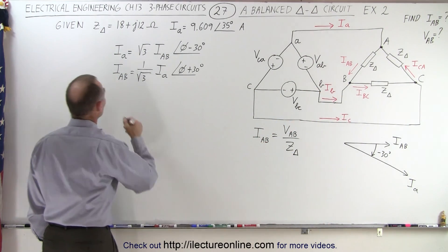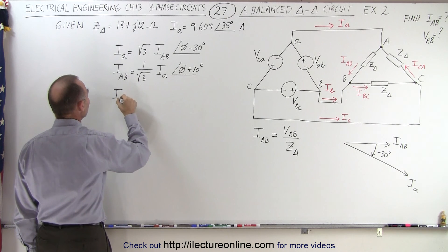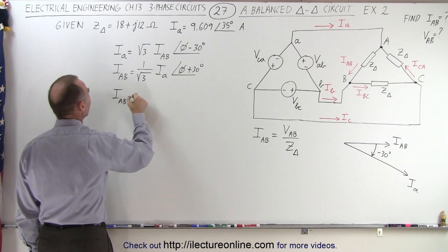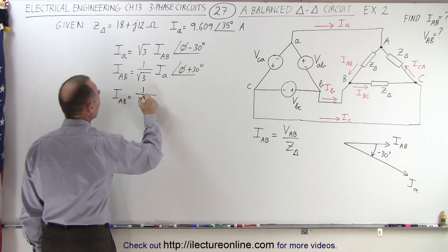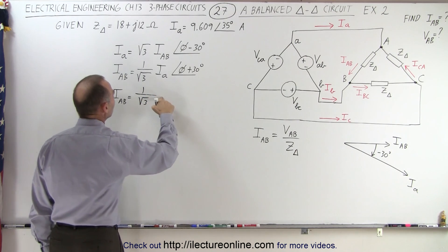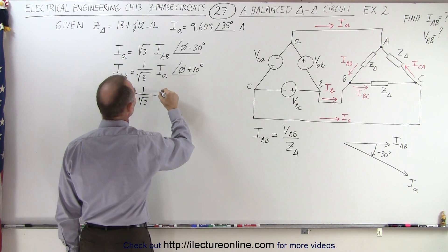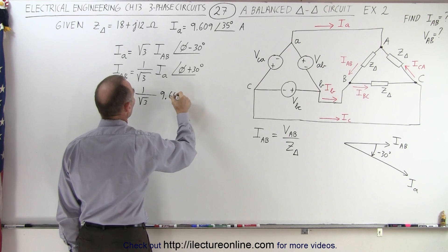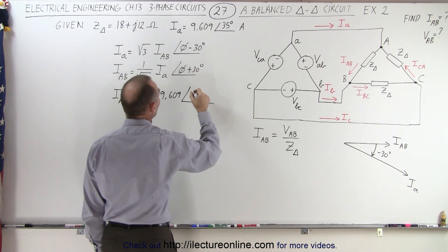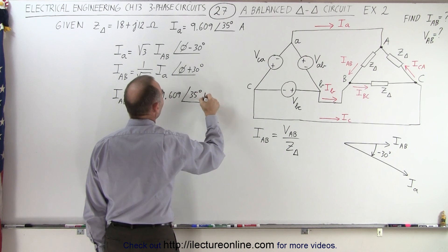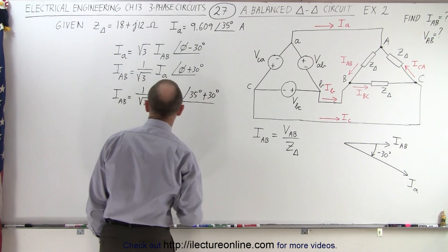So, that's why we have this equation, which means that IAB is therefore equal to one over the square root of three times the magnitude IA, which is given to us as 9.609, and a phase angle starting with 35 degrees and adding an additional 30 degrees to that.